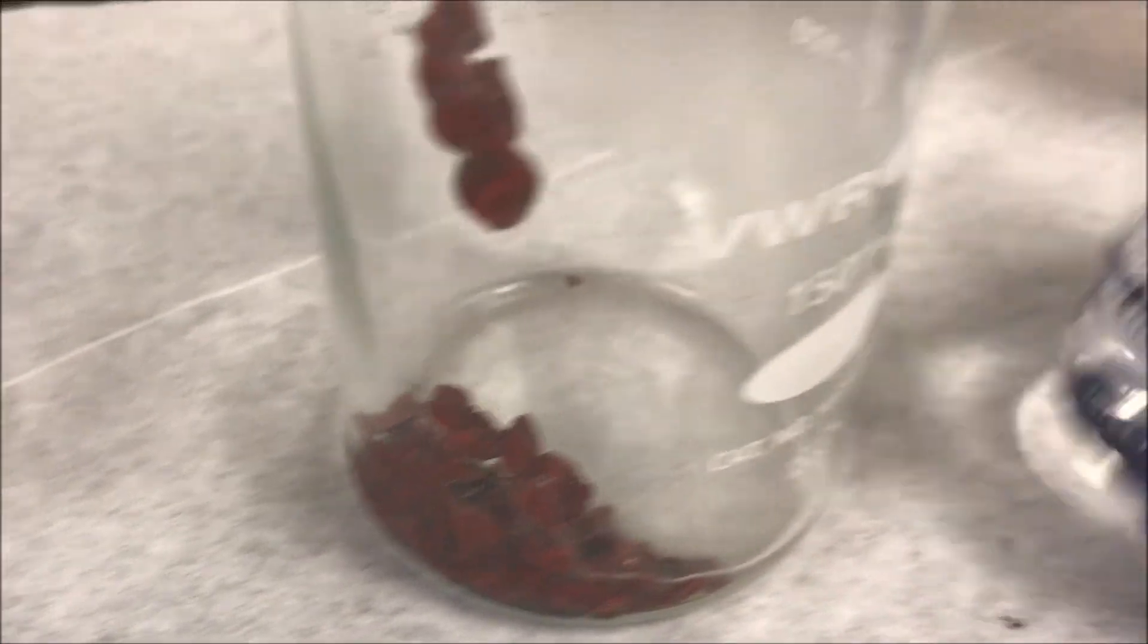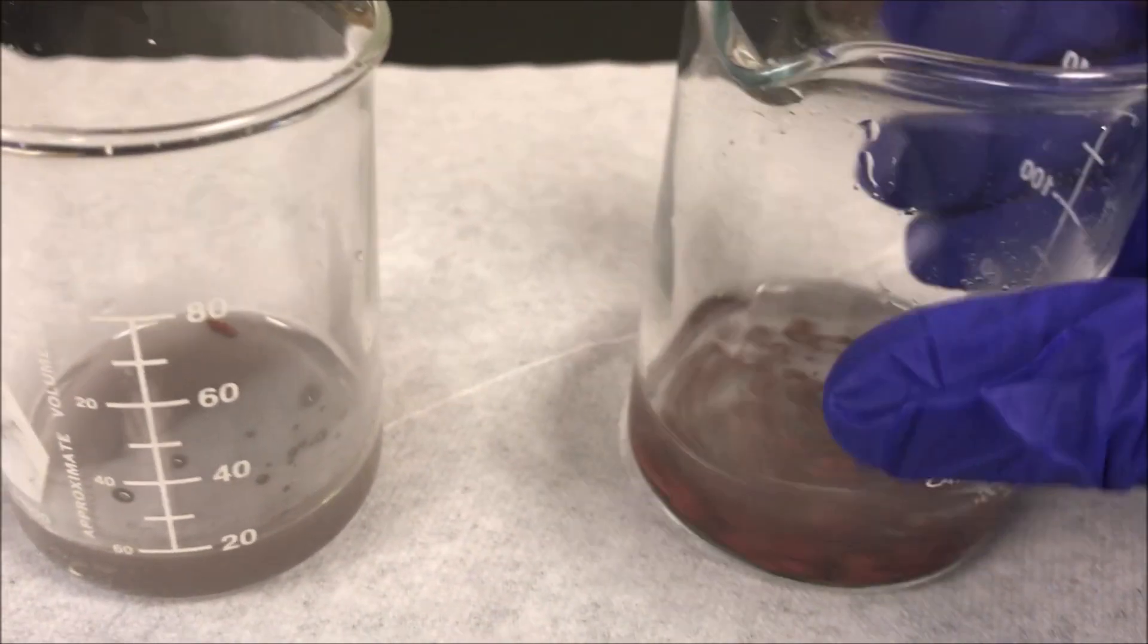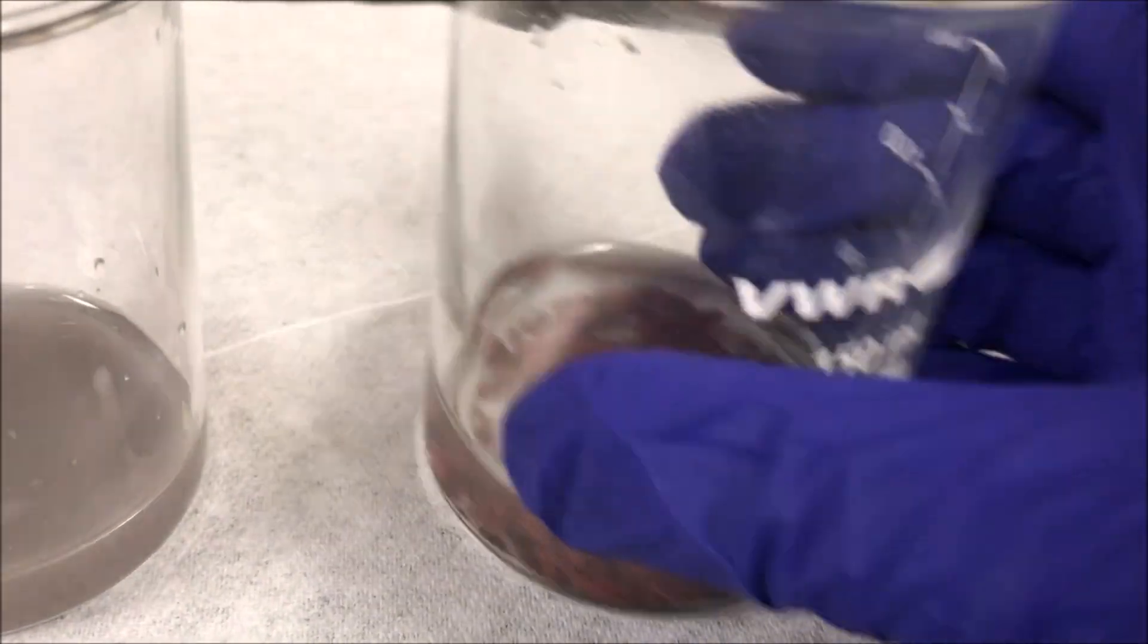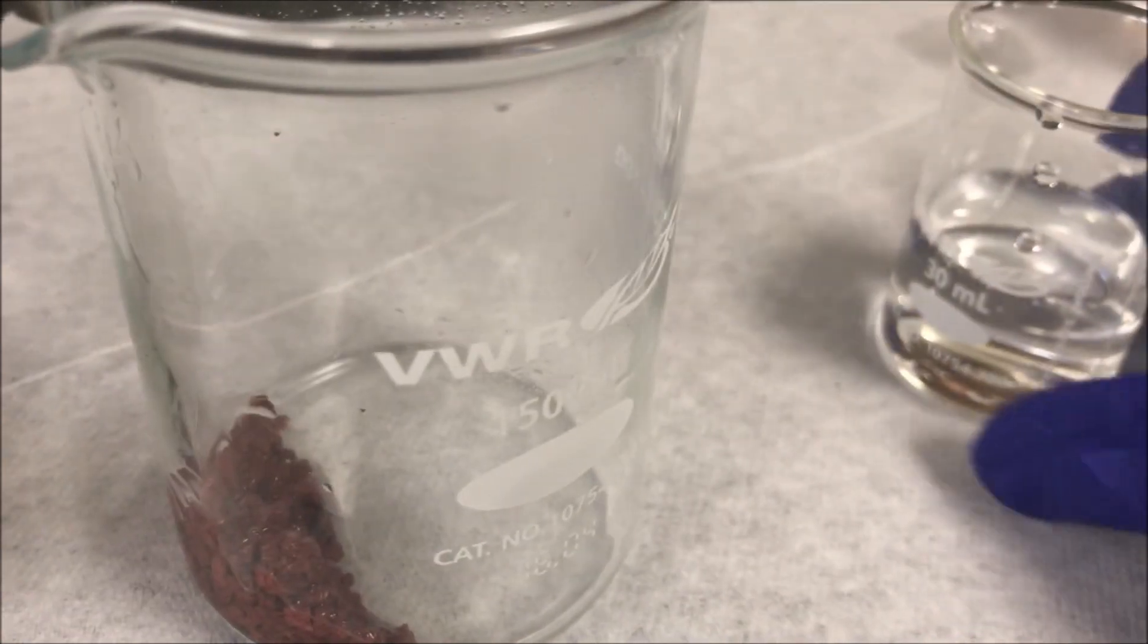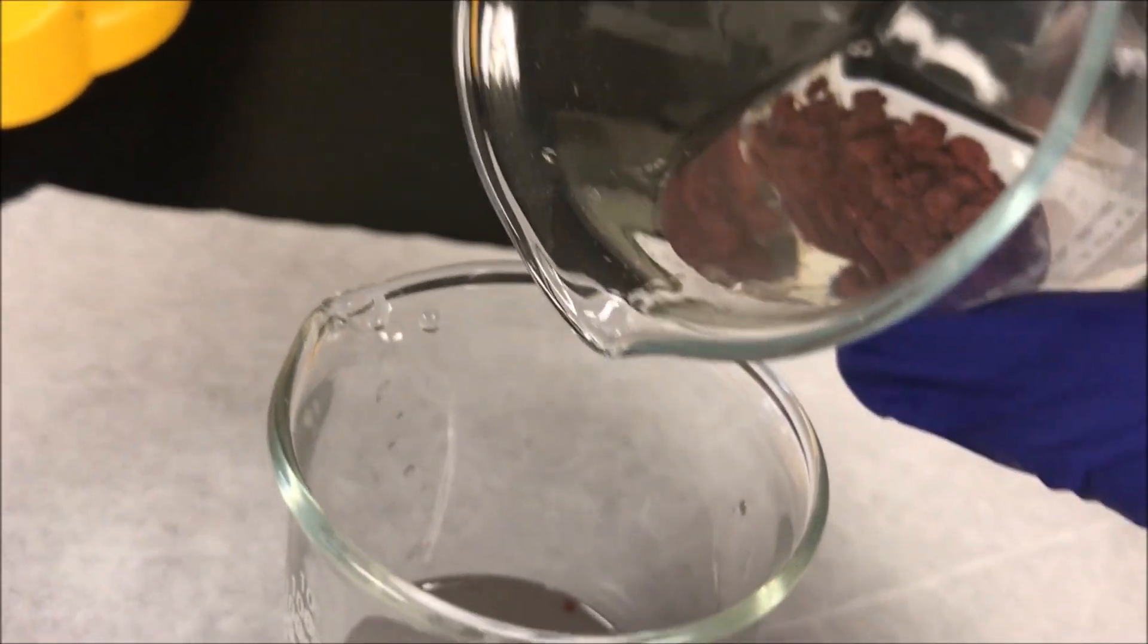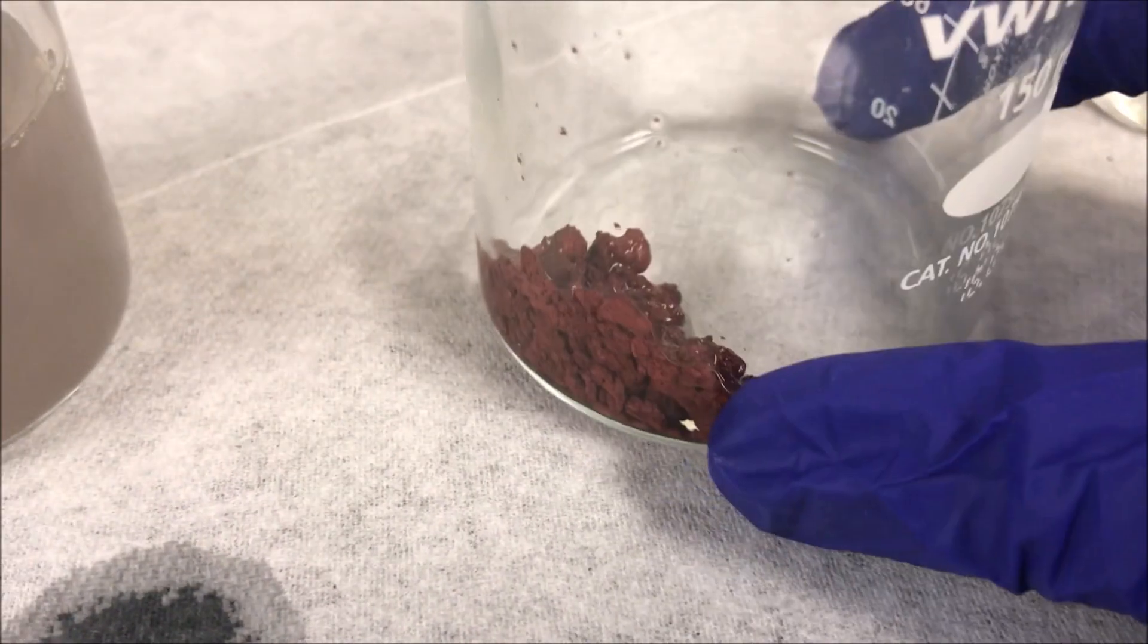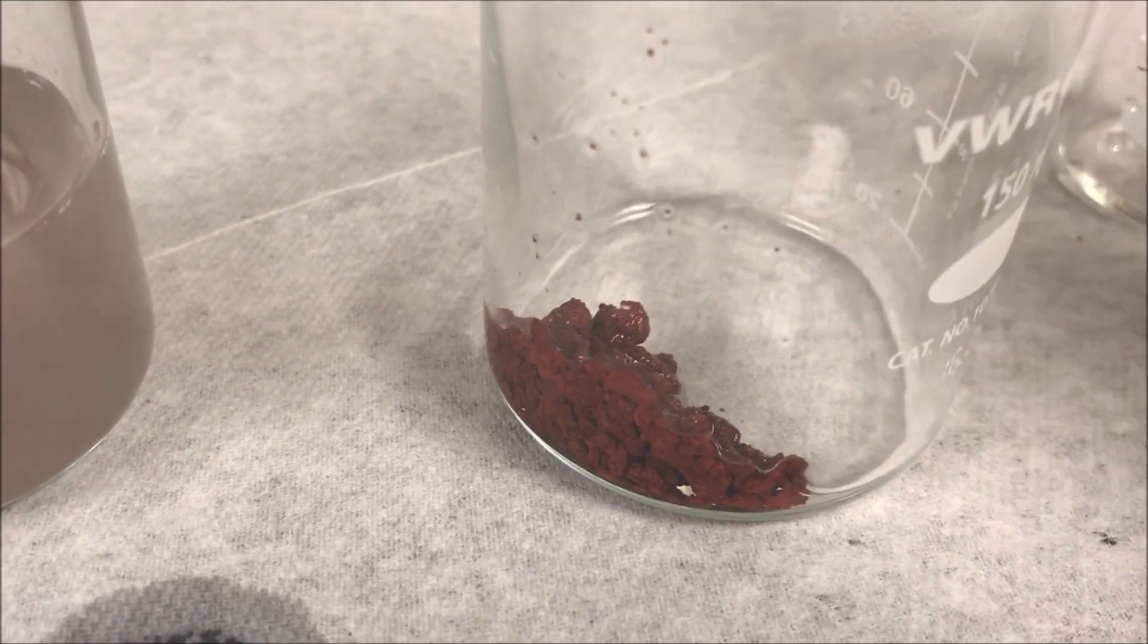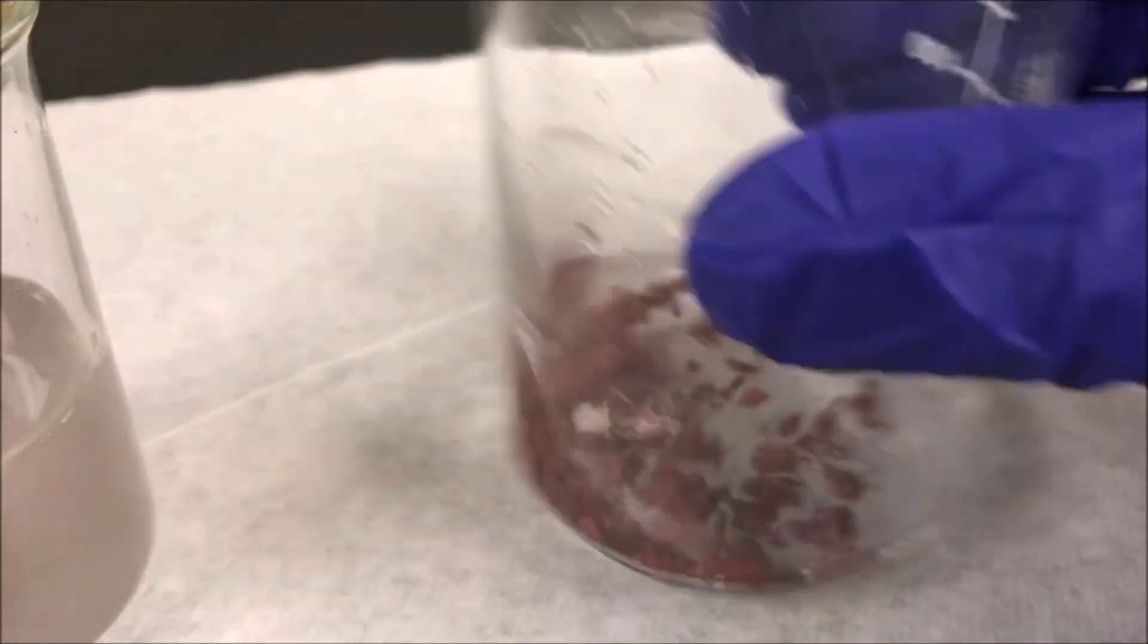Now rinse the copper product with deionized water. Wash the copper product with deionized water two times. Each time you can use 20 ml of water.